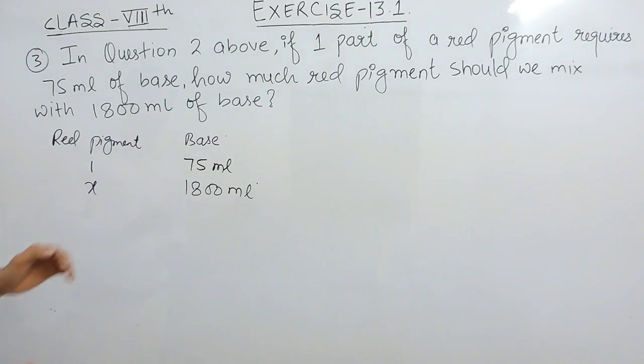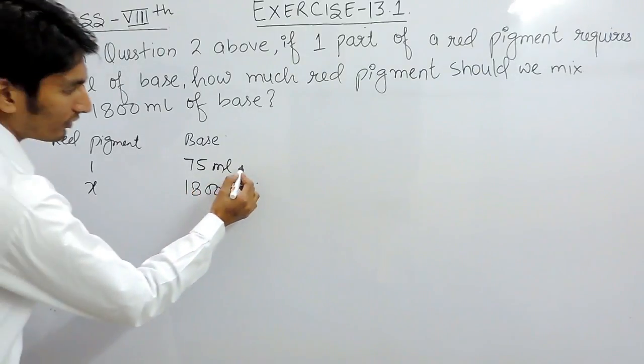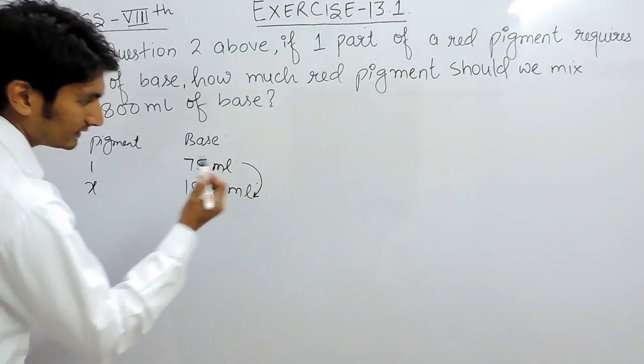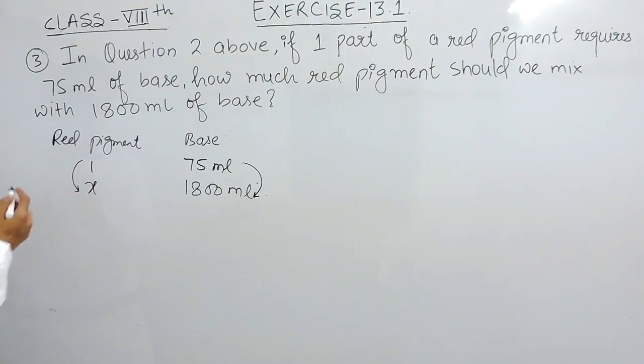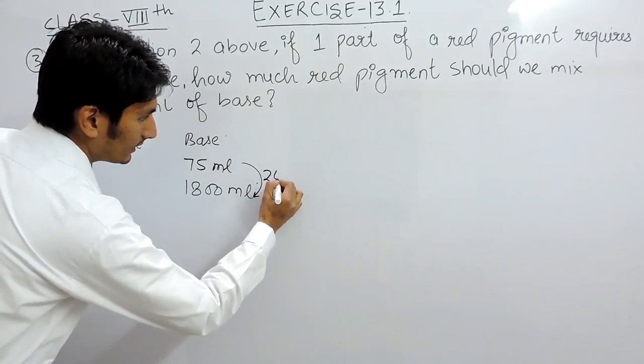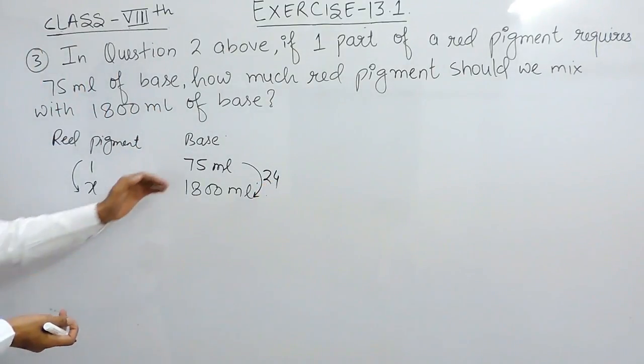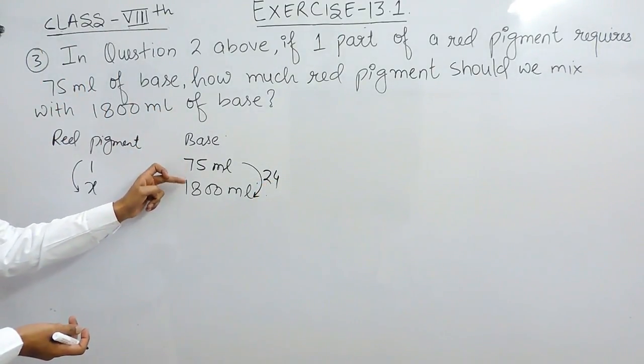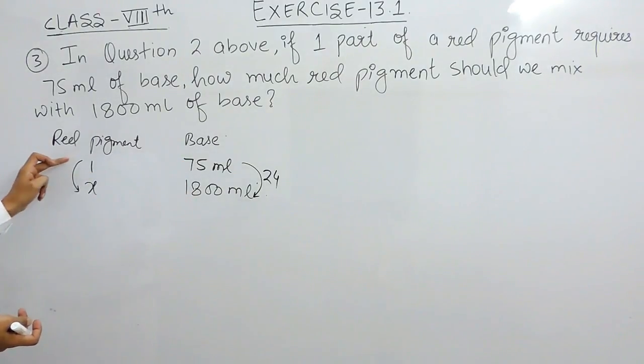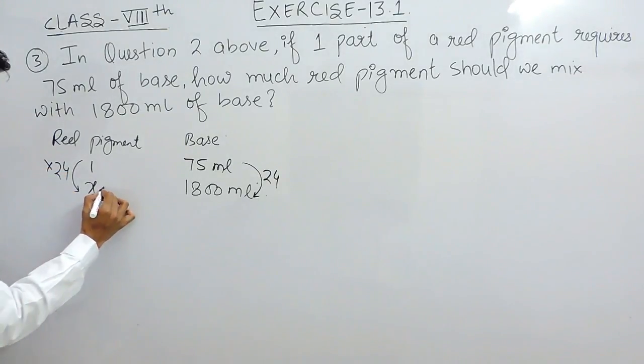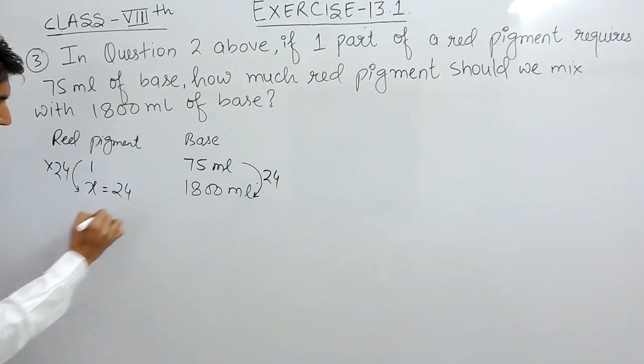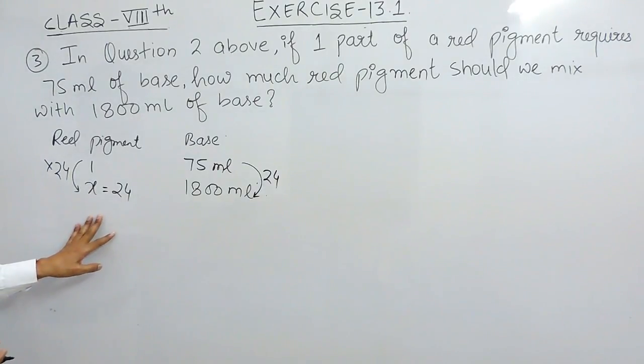We know that wherever these are mixed, they are mixed in proportion, means the number of times this is mixed, the same number of times this must also be mixed. So this is actually mixed 24 times, means this base has increased 24 times. Clearly, the red pigment must also increase 24 times, or in other words, the red pigment must be 24 parts. This is the first method to solve this.